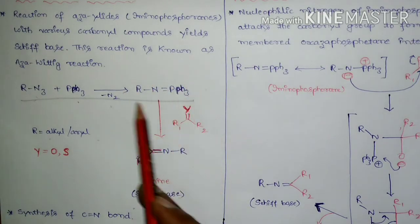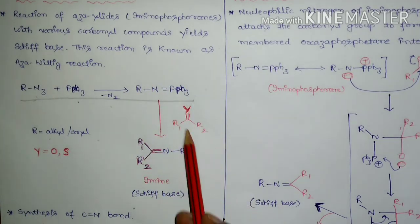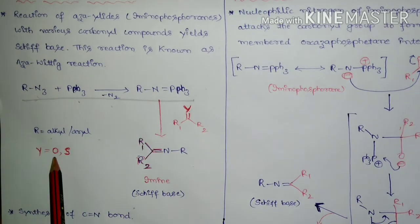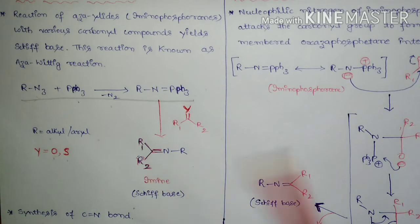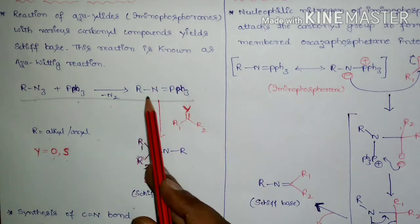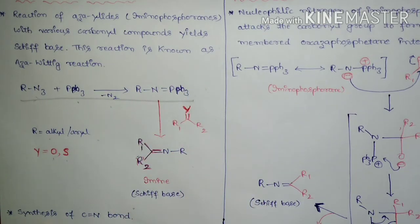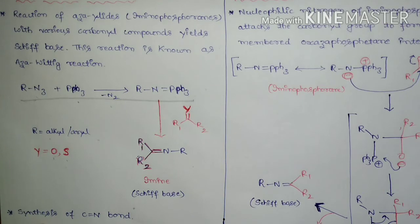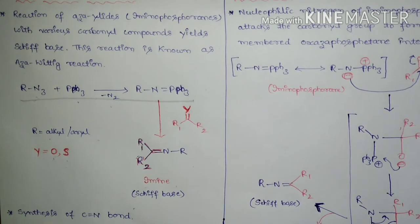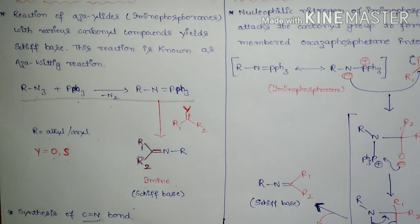Now, if this iminophosphorane reacts with various carbonyl compounds — where Y is equal to oxygen (carbonyls) or sulfur (thiocarbonyls) — it leads to the formation of an amine, that is, a Schiff base. The Aza-Wittig reaction is synthetically very useful because it forms a carbon-nitrogen double bond, which is very important in the formation of heterocyclic compounds.